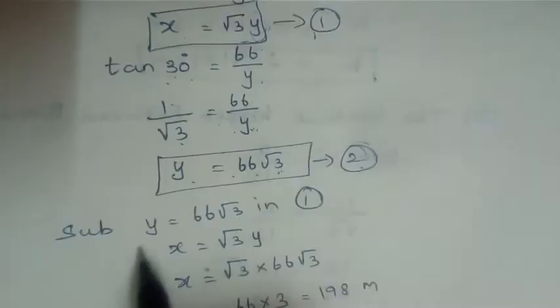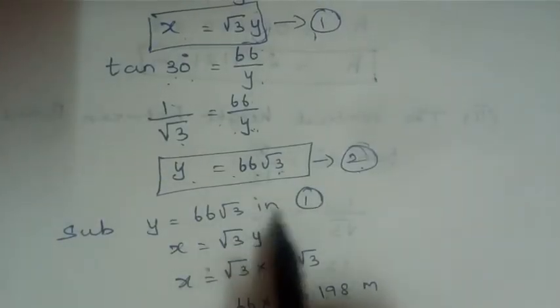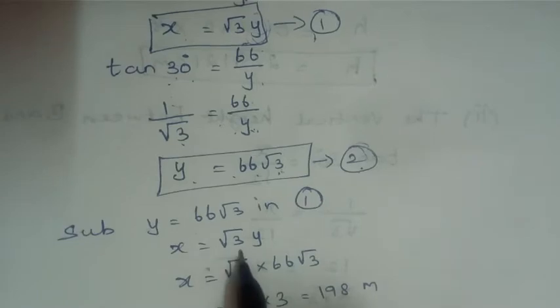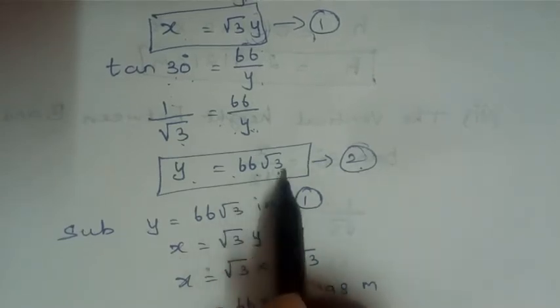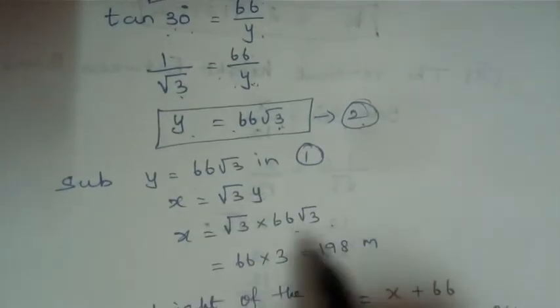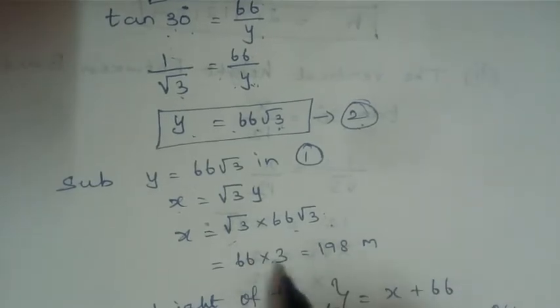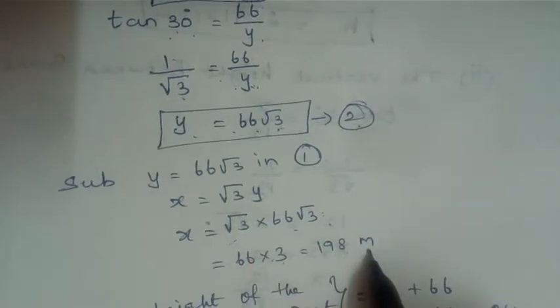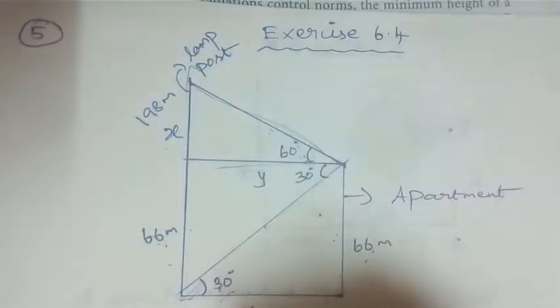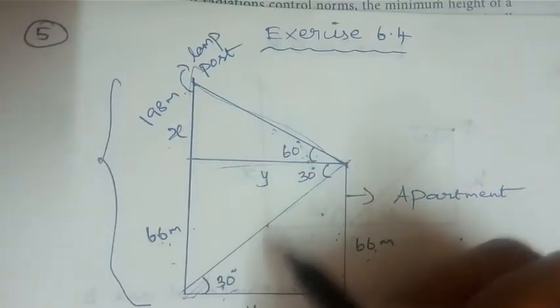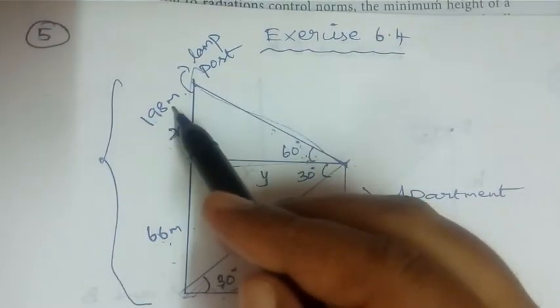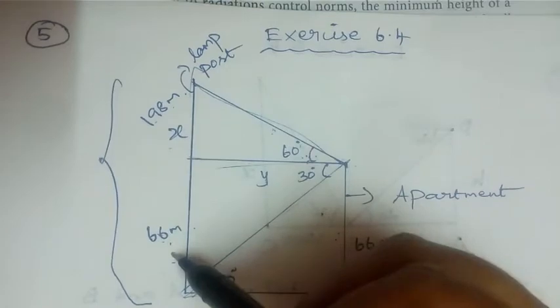From Equation 2, y = 66√3. Substituting into Equation 1: x = √3 × 66√3 = 66 × 3 = 198 meters. So the total height of the lamppost is x + 66 = 198 + 66... wait — x itself is 198 meters, which is the total lamppost height.